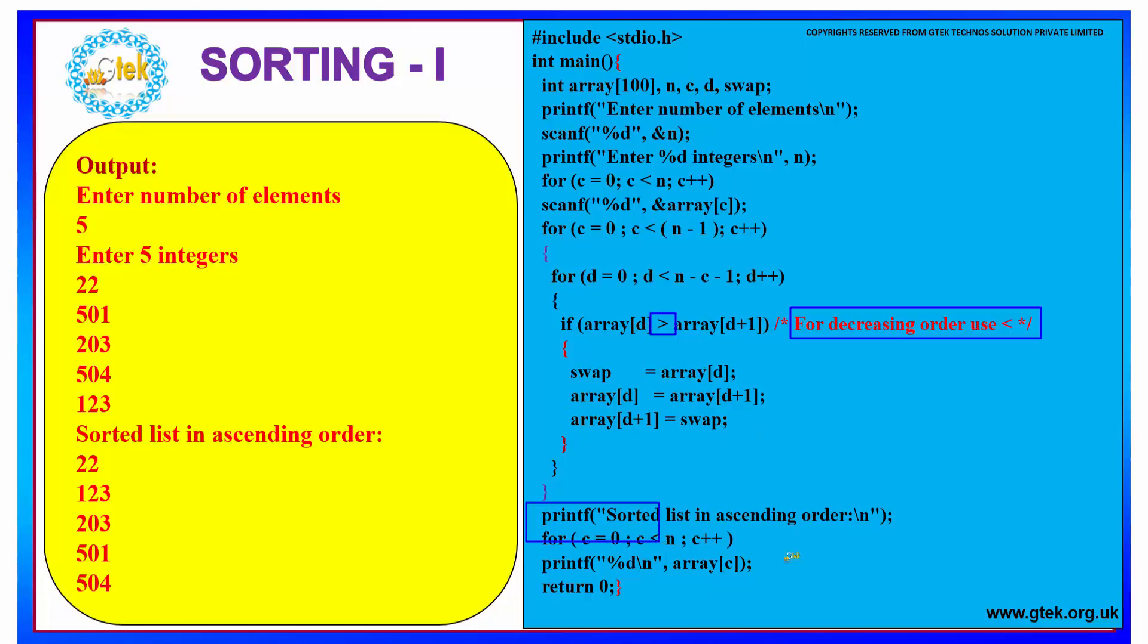And then we have to print the descending ordered or ascending ordered list using a print function, using a for loop, and print the values of the array. So that gives the sorted list of the numbers which you have entered.